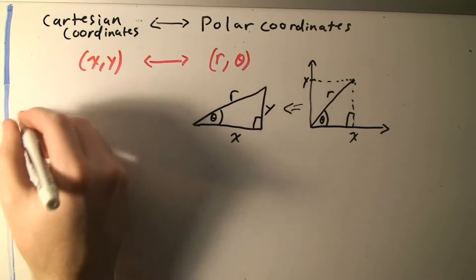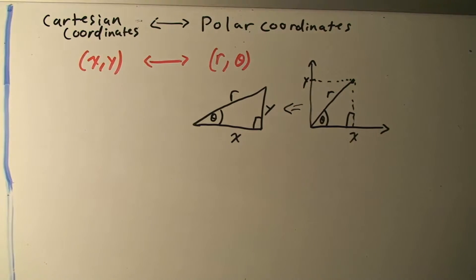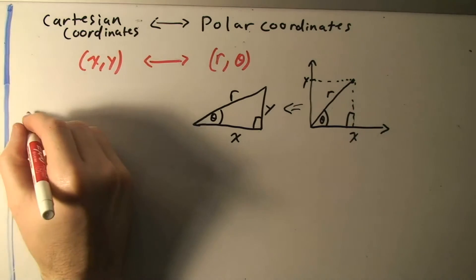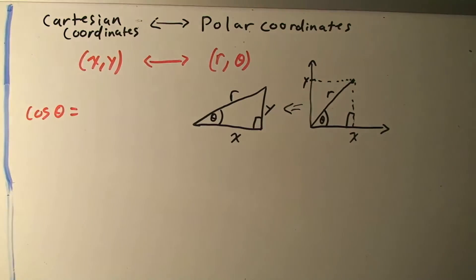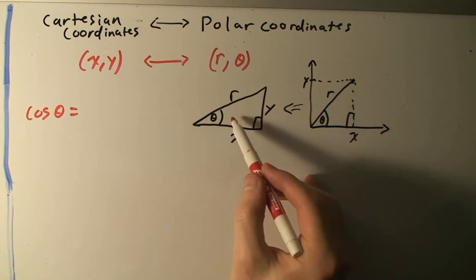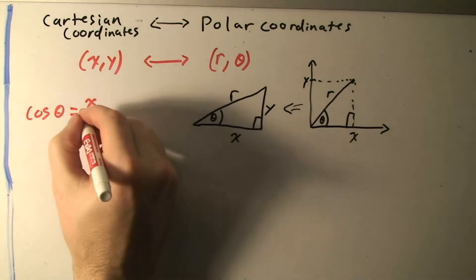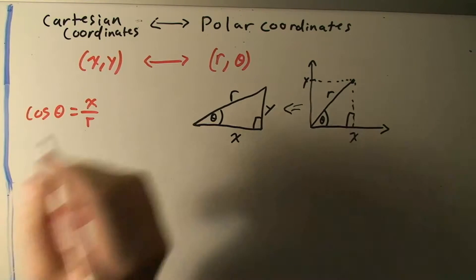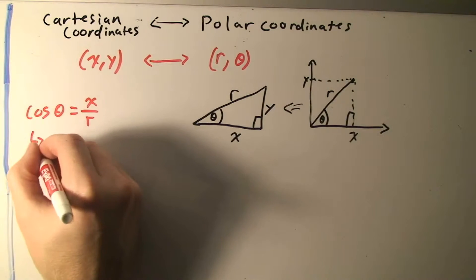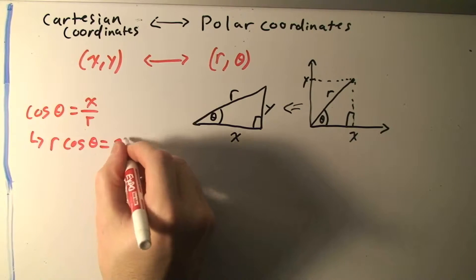We can use the fact that cosine of angle theta is going to be equal to the adjacent side, which is x in this case, over the hypotenuse r. So cosine theta equals x over r. Solving for x by multiplying both sides by r, we get x = r·cos(θ).